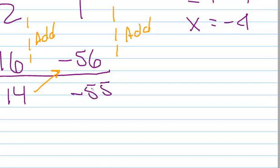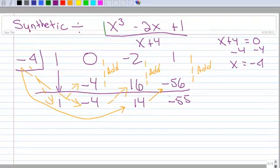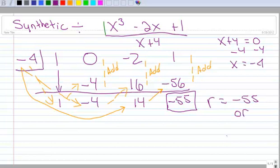And after I do that, I am going to draw this box around it. Always draw this box around it. And when you do that, that tells you that that's your remainder. Negative 55 or negative 55 over x plus 4.